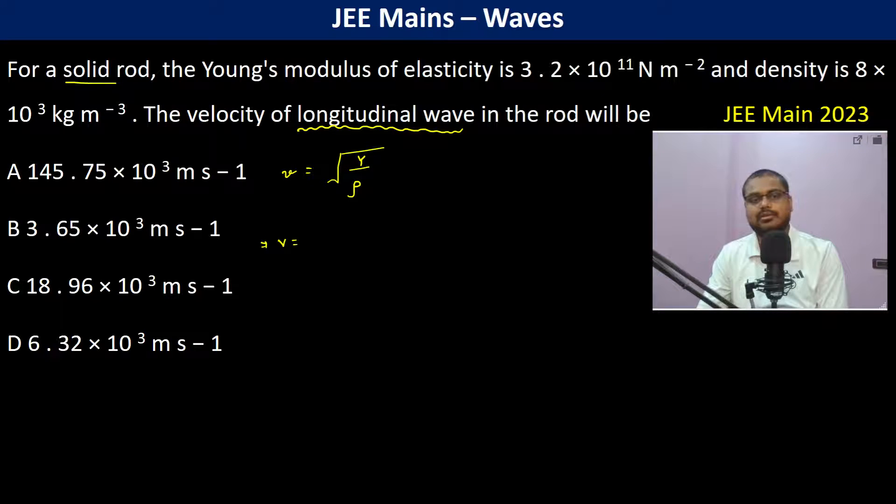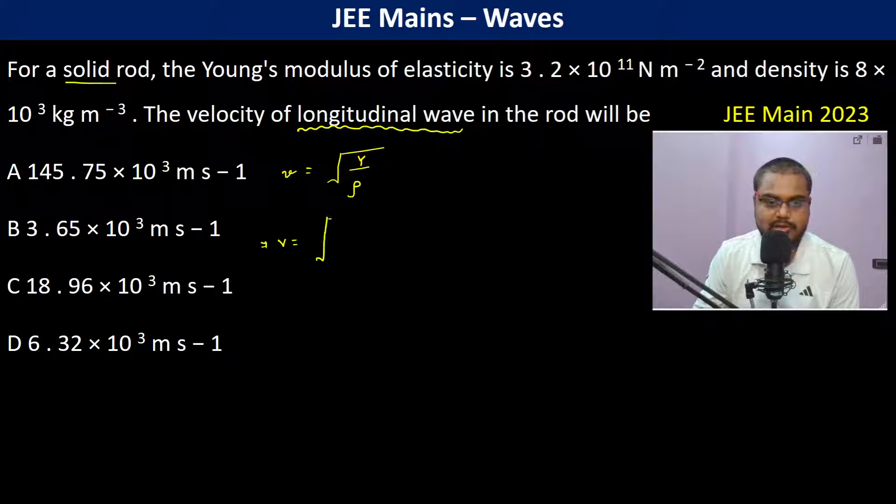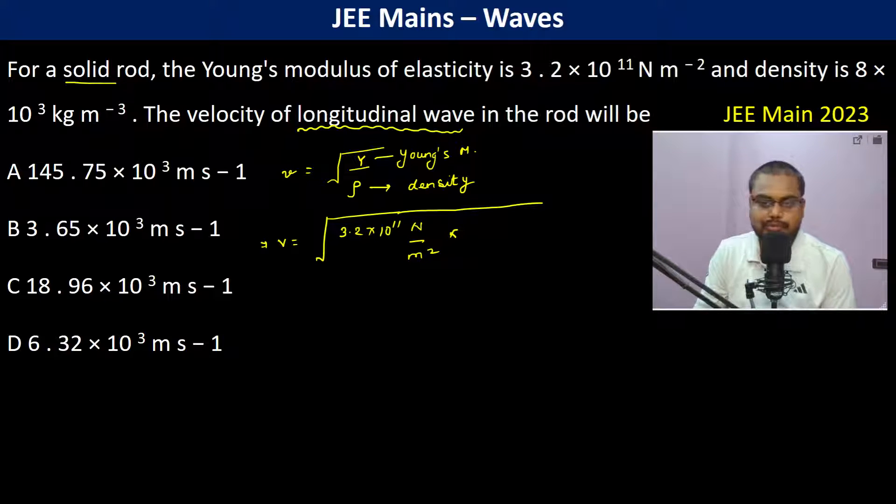Now what is Y? Young's modulus. So this is Young's modulus and this is density. So therefore this becomes 3.2 into 10 to the power 11 newton per meter square into rho, 1 by rho. That is 1 by 8 into 10 to the power 3 kg into meter cube.